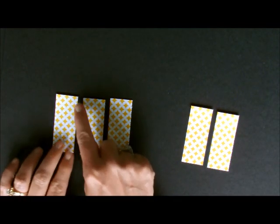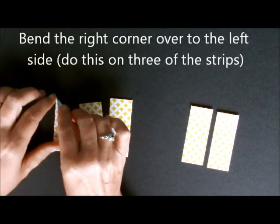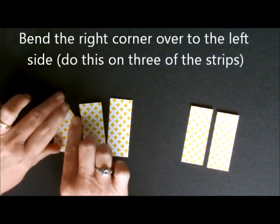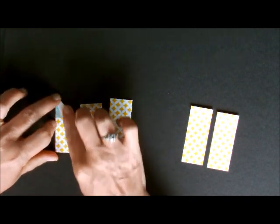For the first three we're going to take the right hand corner and bend it over to the left hand side. We're just going to bend that over and press. You want to get them as accurate as you can.